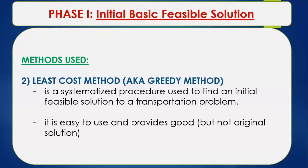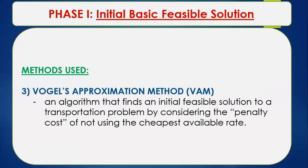Lastly, under Phase One, we have Vogel's Approximation Method, or VAM. It is an algorithm that finds an initial feasible solution by considering the penalty cost of not using the cheapest available rate. Like the least-cost method, in VAM the shipping cost is also taken into consideration, but in a relative sense.